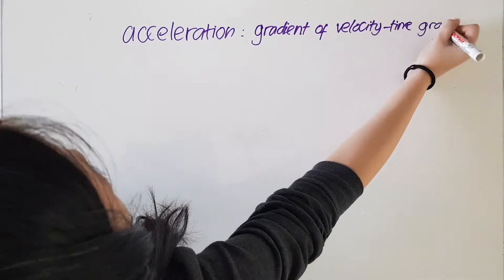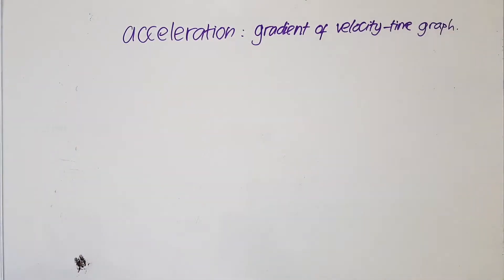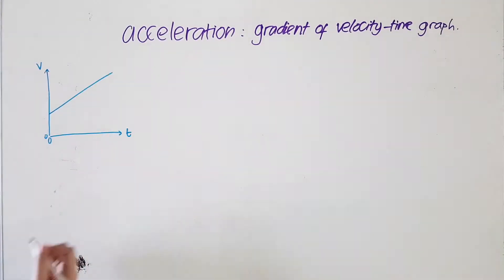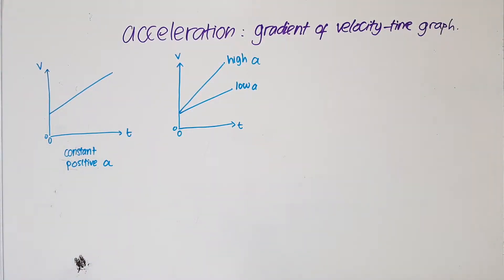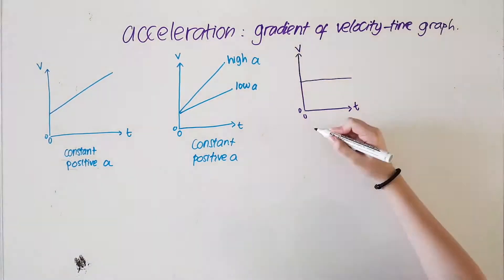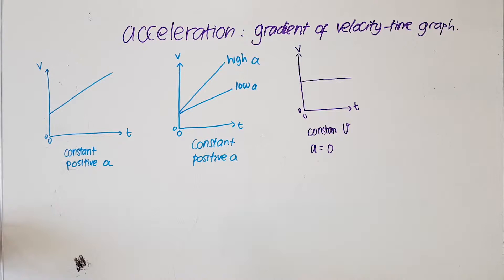We know that the gradient of a velocity time graph represents acceleration. Therefore, a straight line whose gradient is constant represents a constant acceleration. Positive gradient indicates a positive acceleration. The steeper the line, the greater the acceleration. A horizontal line in a velocity time graph has zero gradient. Thus, the acceleration is zero and the object moves with constant speed.